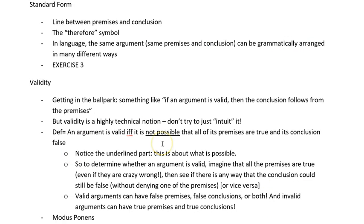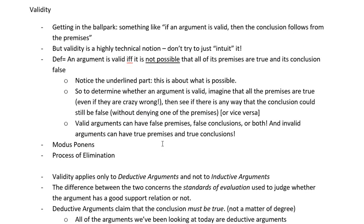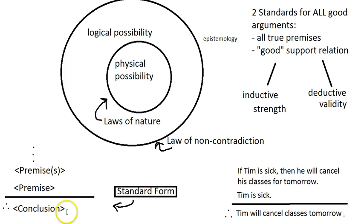Going to my lecture notes on validity: the informal notion is something like, if an argument is valid, then the conclusion follows from the premises. What do we mean by 'follows from'? Something like — if I agree with the premises, then I'm bound to agree with the conclusion. That's what we do when we're giving arguments: 'Do you agree that this is true? Well, then you've got good reasons for thinking the conclusion is true.' The idea that you're stuck believing the conclusion if you accept the premises is more of what we mean by deductive validity.